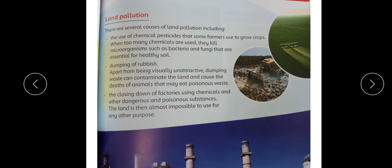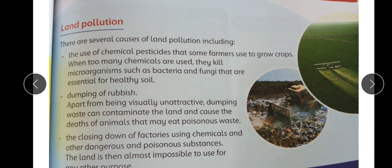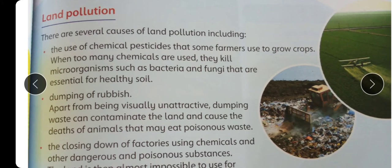Now on the next page, let's study each type in detail. First: Land pollution. There are several causes of land pollution — zameen kyun aaluda hoti hai. The use of chemical pesticides: faslon par keede maarne ke liye spray karte hain, uski waja se bhi zameen pollute ho jaati hai. Some farmers used to grow crops, but now almost every farmer uses pesticides. When too many chemicals are used, the micro-organisms inside the soil — jaise bacteria and fungi that are essential for healthy soil — wo mar jaate hain.